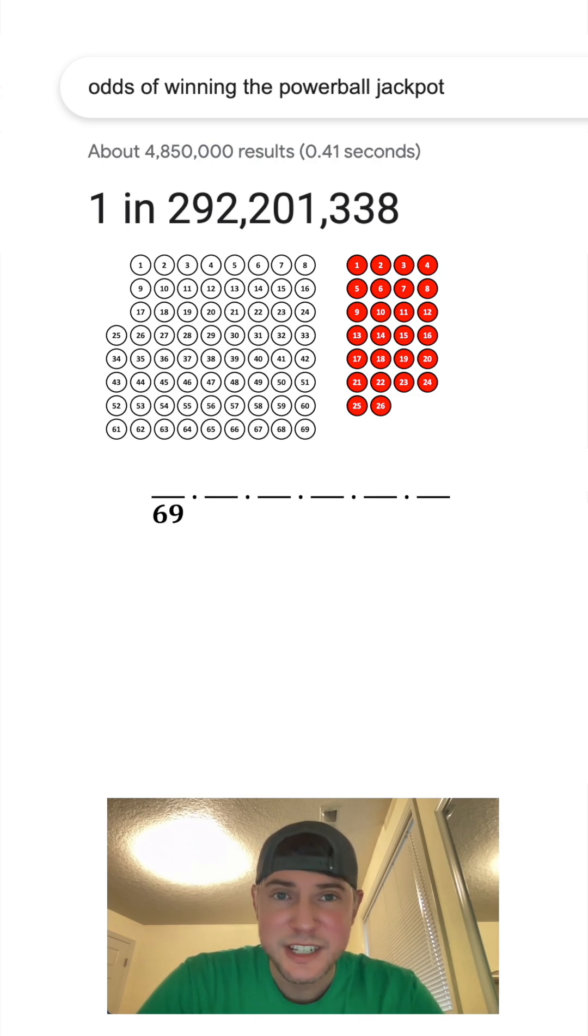So for the first ball, there are 69 balls we can choose from and there are 5 that are potential winners in the pool. After we select one of the winning balls, there's only 68 remaining balls to select from and only 4 of those are winners.